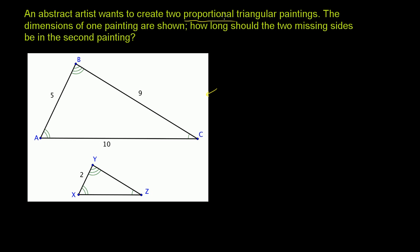There are two proportional triangular paintings — one way to think about it is that they are two similar triangles. We know, based on how these triangles are marked up, that they are similar triangles. This angle with two arcs has the same measure as that angle over there. This angle with three arcs has the same measure as this angle over there. And this angle with one arc has the same measure as this angle over there. If the corresponding angles are congruent, then we know that these are similar triangles.